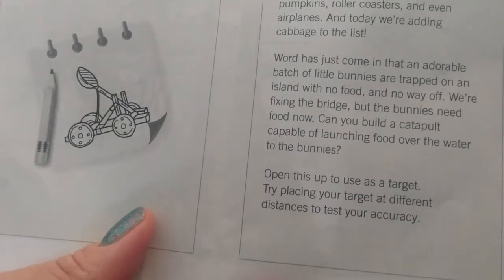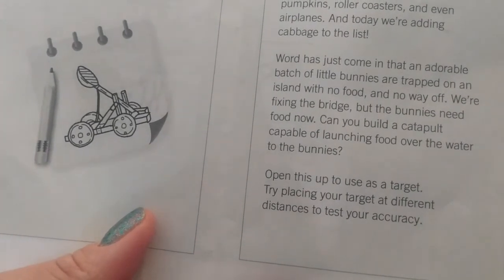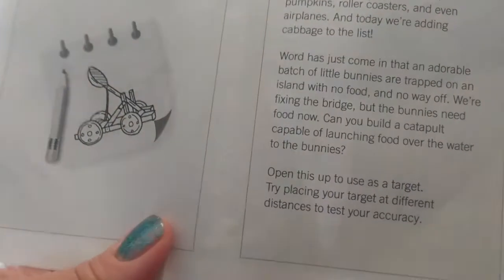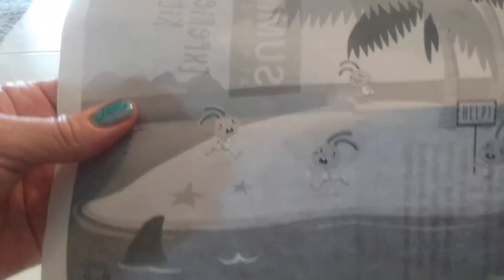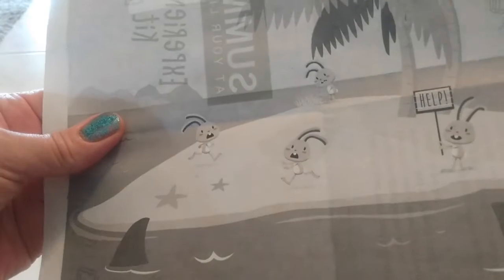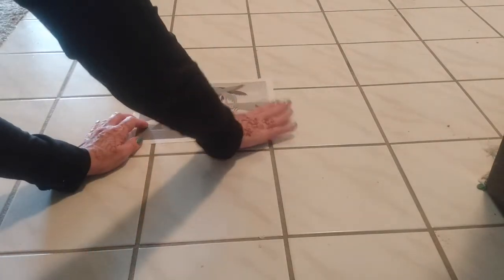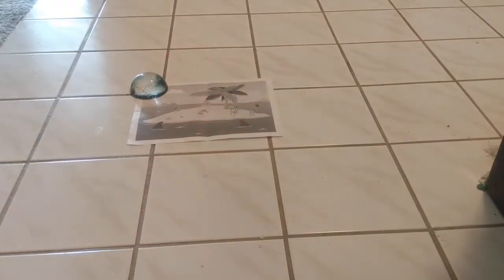Open this up to use as a target. Try placing your target at different distances to test your accuracy. Oh look, there's all the little bunnies! We've got some sharks and an island. So that's my target. I'm gonna put that out here. Hold it down. There we go! Now it's like they're really out on an island. If only I had a bunch of water around here. Let's see what else I have in my bag.